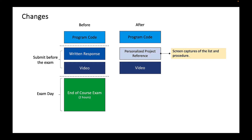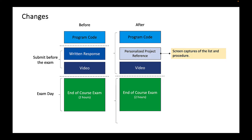Why is this required? Because in addition to the two-hour multiple choice end of course exam, an additional hour has been added where students are asked to write their written response during the exam, live. So how will they be able to write their response without their project code? Well, during the exam, they'll have access to — wait for it — the personalized project reference they uploaded to the AP digital portfolio in the previous month. This is such a smart assessment approach. Students can use ChatGPT all they want to create their projects. However, at the end of the day, they're going to have to explain their code using their own words and their personalized project reference.